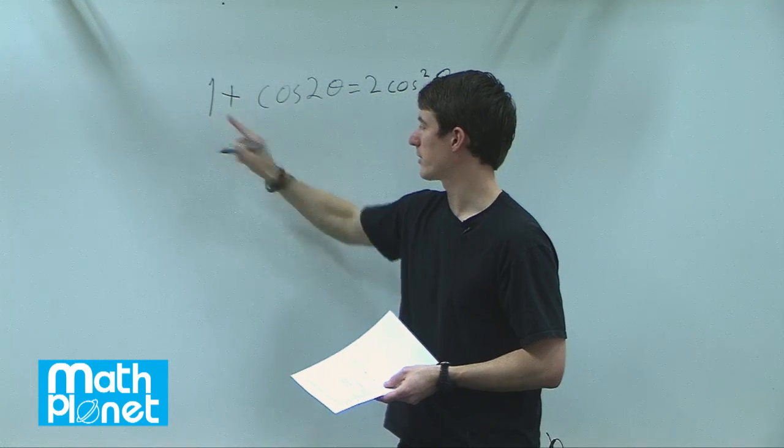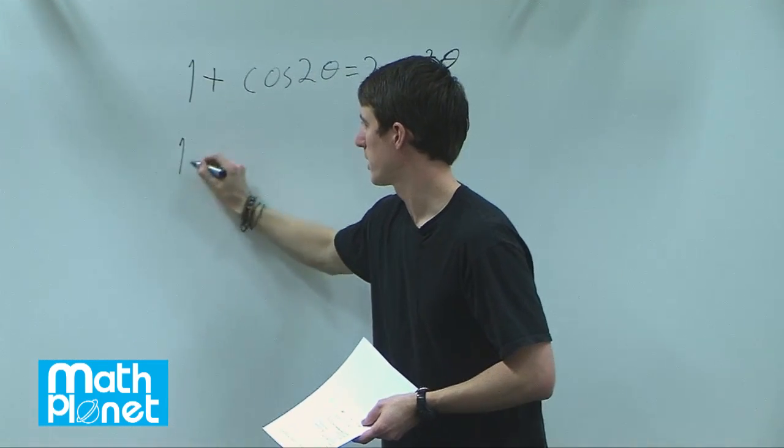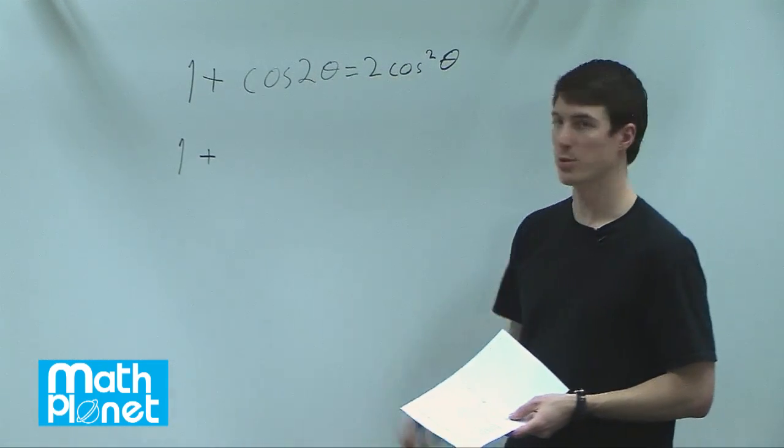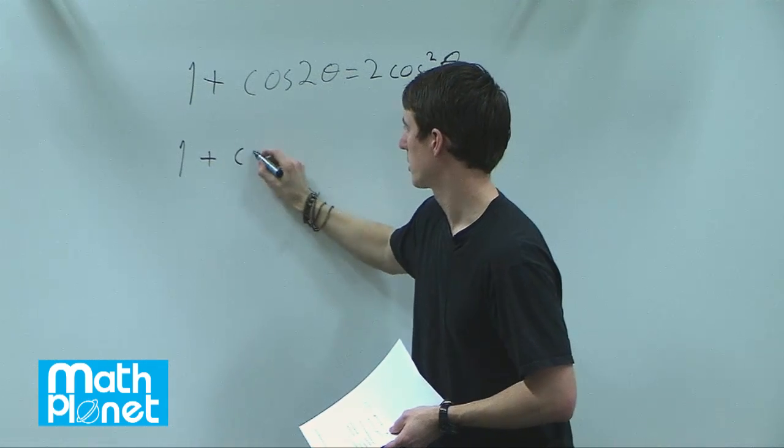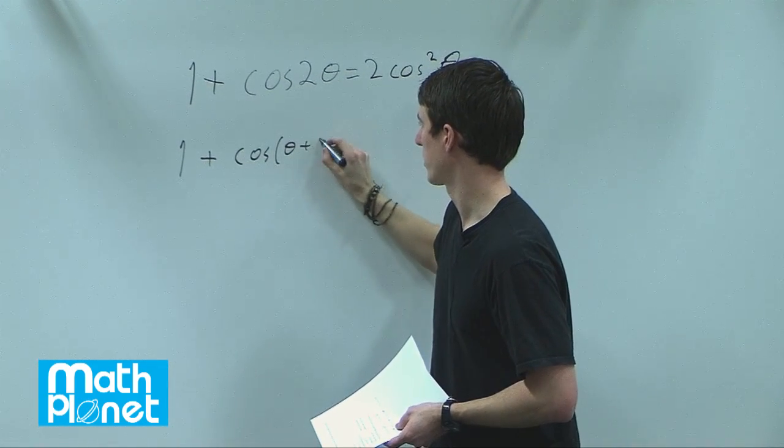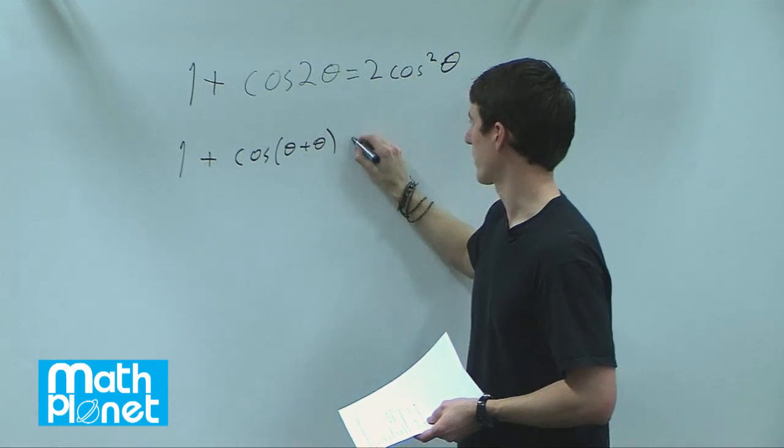So we can immediately change, leave this 1 alone actually, and then we'll say that cosine of 2 theta, we can just write that as cosine of theta plus theta. So that's the same, okay.